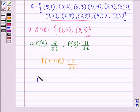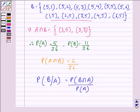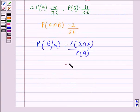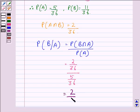Now, required probability is probability B by A that is equal to probability B intersection A divided by probability of A, that is equal to 2 by 36 divided by 5 by 36, and that is equal to 2 by 5.